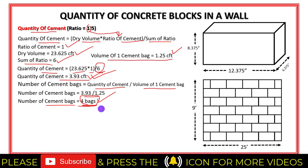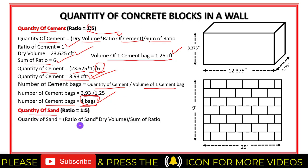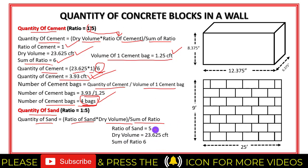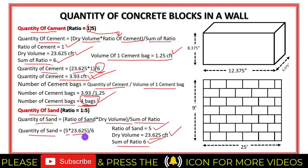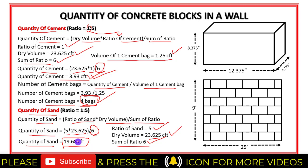Next is the quantity of sand. The quantity of sand equals ratio of sand × dry volume of mortar ÷ sum of ratio: 5 × 23.625 ÷ 6 = 19.68 cubic feet. So this is the quantity of sand required in the mixing of 1:5 mortar.